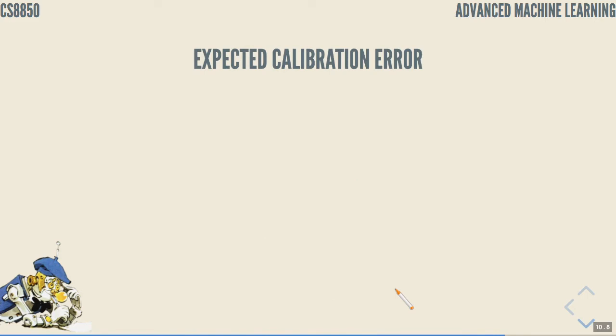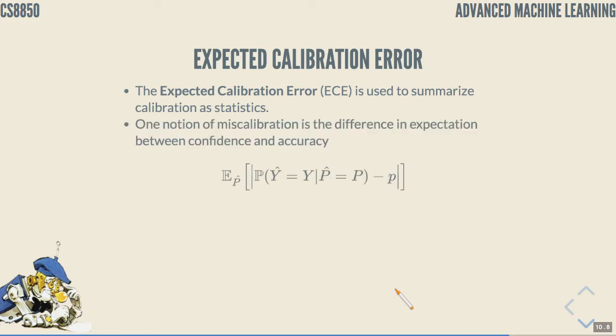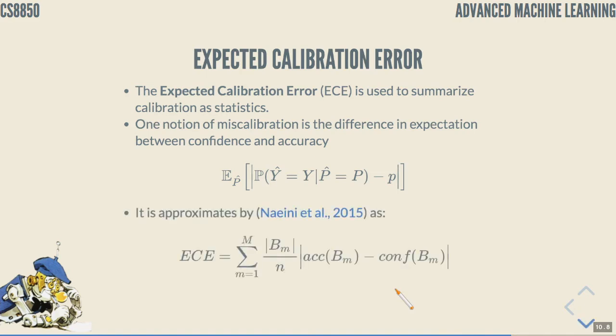A perfectly calibrated model will have expected accuracy equal average confidence. Now, let's define a metric. How can we say if one model is better than another by looking at a single number? For that, we define expected calibration error, ECE. It's used to summarize calibration as one statistic. One notion of miscalibration is the difference in the expectation between confidence and accuracy. This expectation is approximated by absolute value of the difference between expected accuracy and average confidence, weighted by the size of the bin.